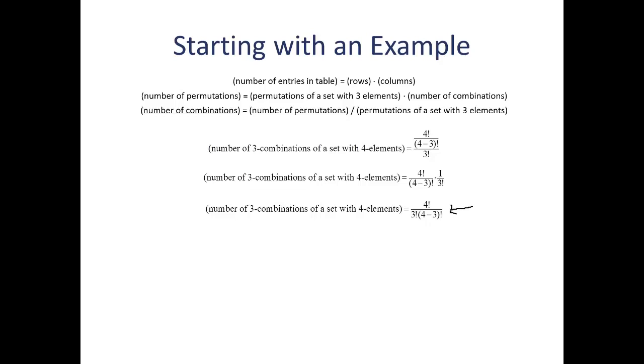Now, here's where we're ready to make the jump to the general formula. To get a formula that works for a combination of r elements instead of the three in our example, from a set with n elements instead of the four in our example. I'm going to replace the fours in our formula with n, and I'm going to replace the threes in our formula with r. And that's going to give me the formula that I'm looking for. The number of r combinations of a set with n elements is equal to n factorial divided by r factorial times n minus r factorial.